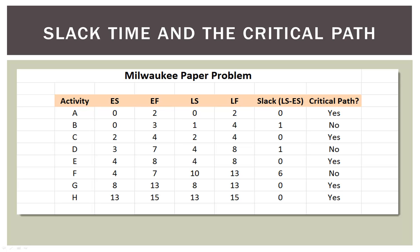This is the spreadsheet for our network. Some of our activities have slack and some don't. Notice that if the slack is zero, the activity is on the critical path, and when we do the diagram that will make more sense.